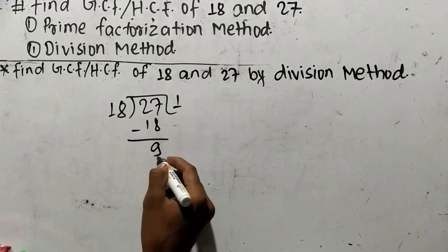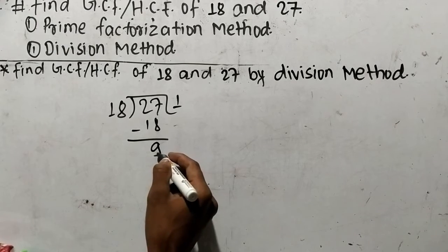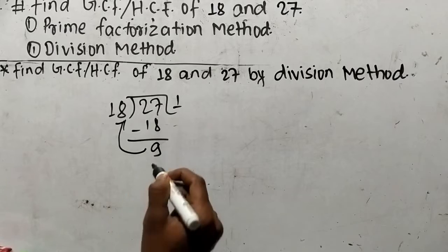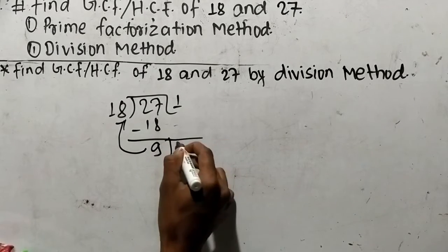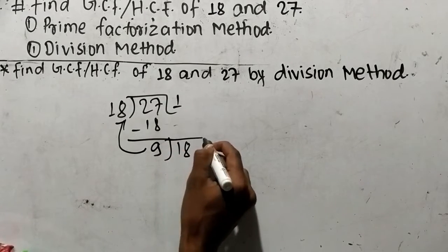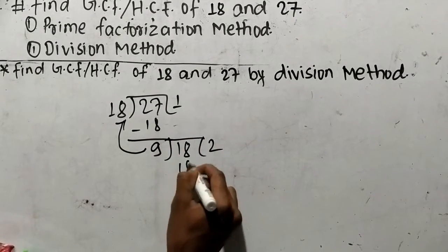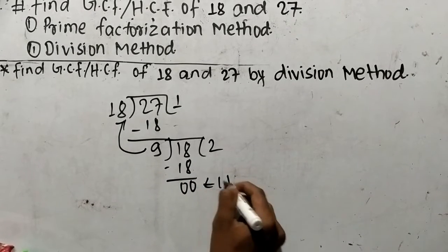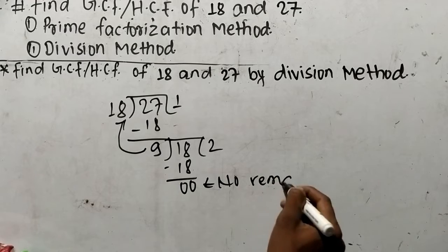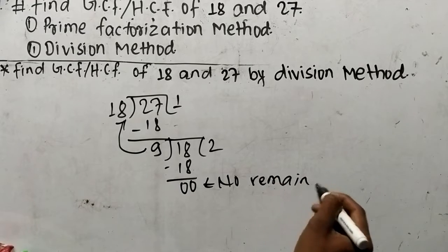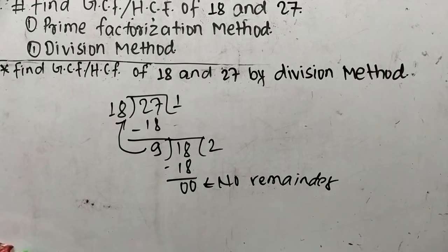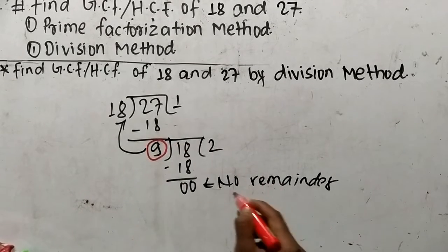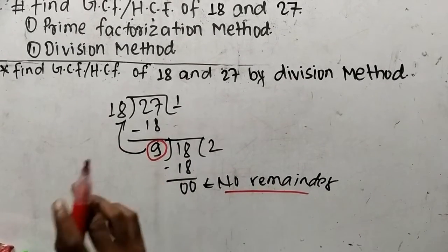18 times 1 equals 18, and 27 minus 18 equals 9, so the remainder is 9. When a remainder comes, we have to again divide the divisor by the remainder. So 9 divides 18: 9 times 2 equals 18, and at last we have no remainder.